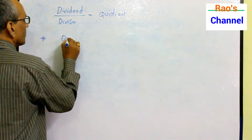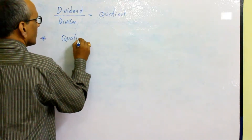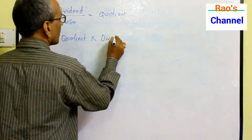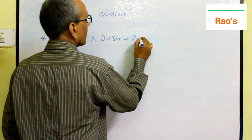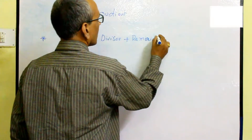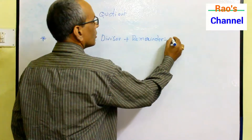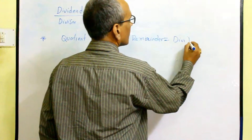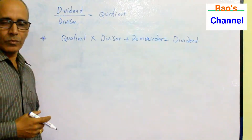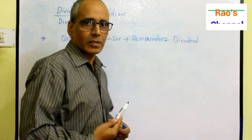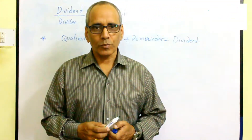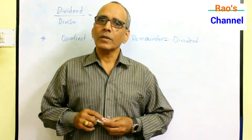Based on this concept, we already learned that quotient into divisor plus remainder is equal to dividend. This is the algorithm we follow to check whether our division is correct or not. We presented this in the LAF classes too, and the same we apply in this class.